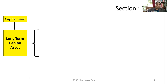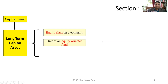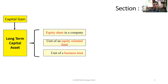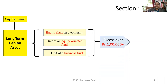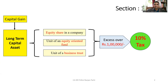This section covers three kinds of assets: not only equity shares, but also units of equity oriented fund as well as units of business trust. For all these three kinds of assets, if the long-term capital gain is in excess of rupees one lakh, then on that excess amount capital gain tax has to be paid at the rate of 10 percent.